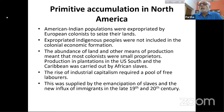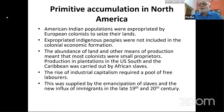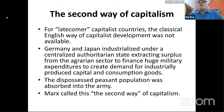The abundance of land and other means of production meant most colonists were small proprietors. Production in plantations in the US South and the Caribbean was carried out by African slaves. The rise of industrial capitalism required a pool of free laborers — supplied by emancipation of slaves after the Civil War, and then new influx of immigrants in the late 19th and early 20th century — Europeans first, and from the middle of the 20th century, immigrants from many other countries.